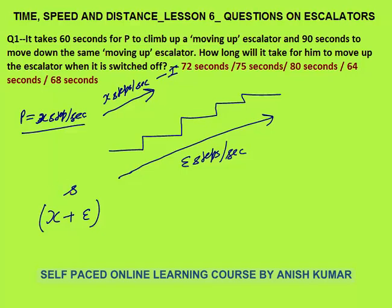Effective speed is x plus e steps per second. Time taken to reach the top is 60 seconds. So speed into time gives distance: (x plus e) into 60 equals the total steps on the escalator. This is our first equation.